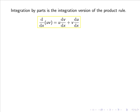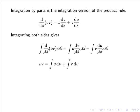If we multiply both sides by dx and integrate each term, we have ∫(d/dx)(uv)dx = ∫u(dv/dx)dx + ∫v(du/dx)dx.